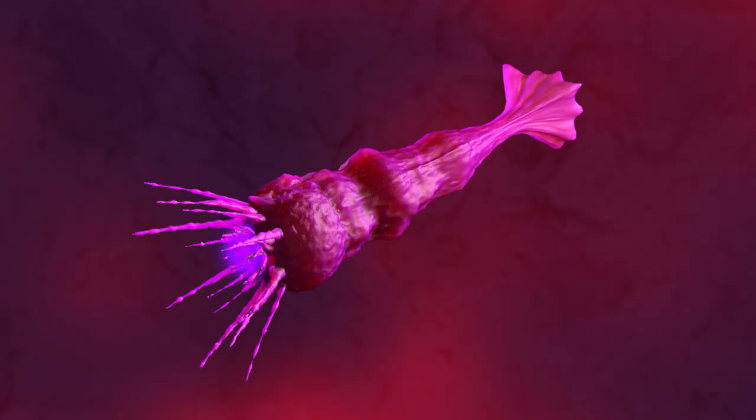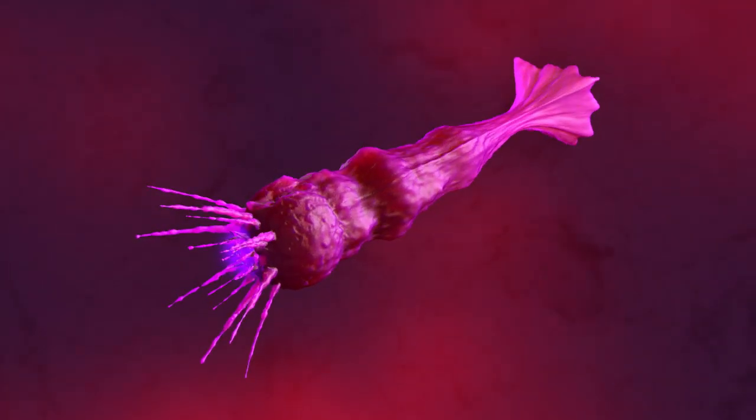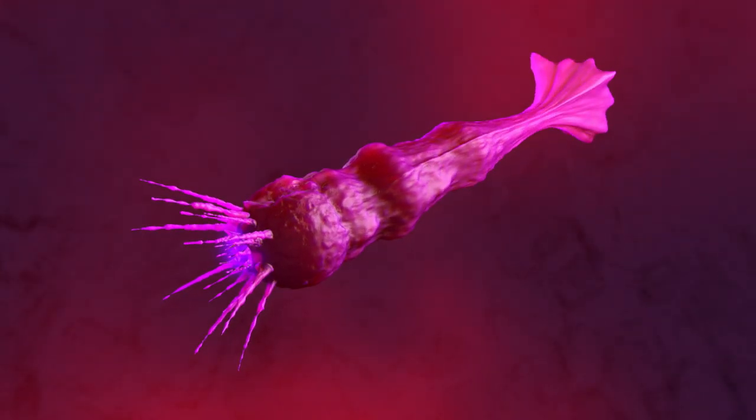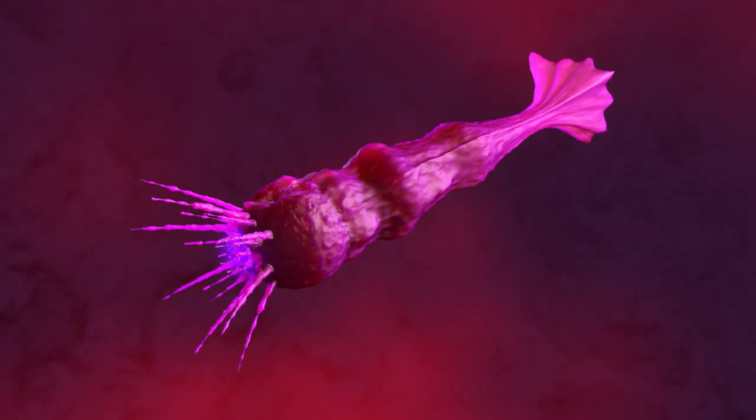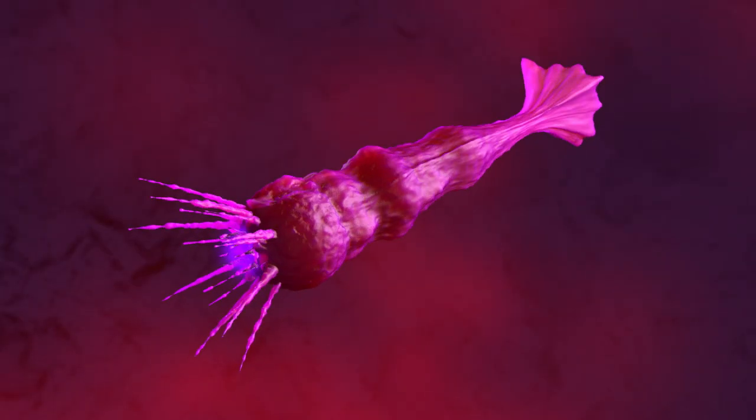A tidally locked planet with a thick atmosphere could have life forms that float or fly in the atmosphere, taking advantage of the planet's atmospheric currents. Atmospheric life forms would need to be lightweight and buoyant, with structures such as gas-filled sacs or hollow bones that allow them to stay aloft.